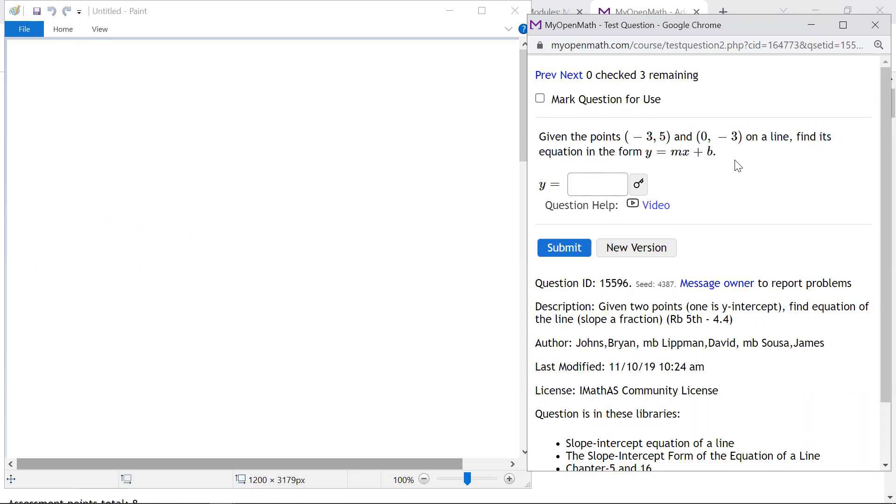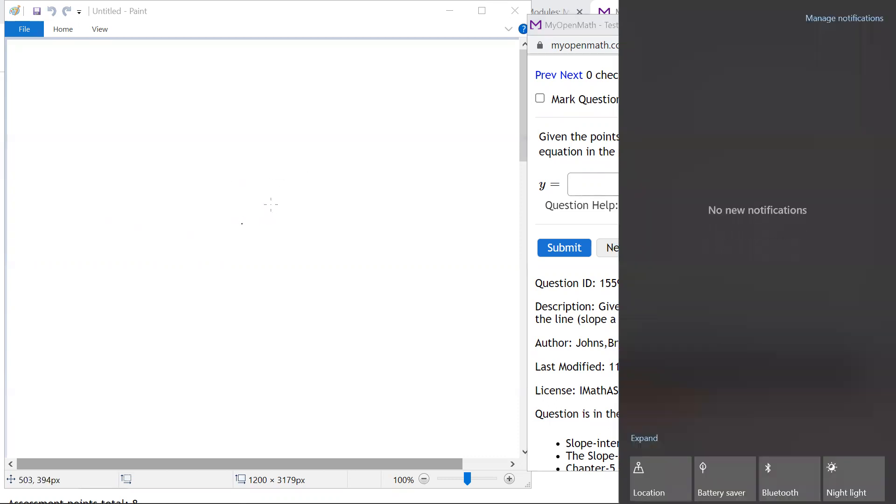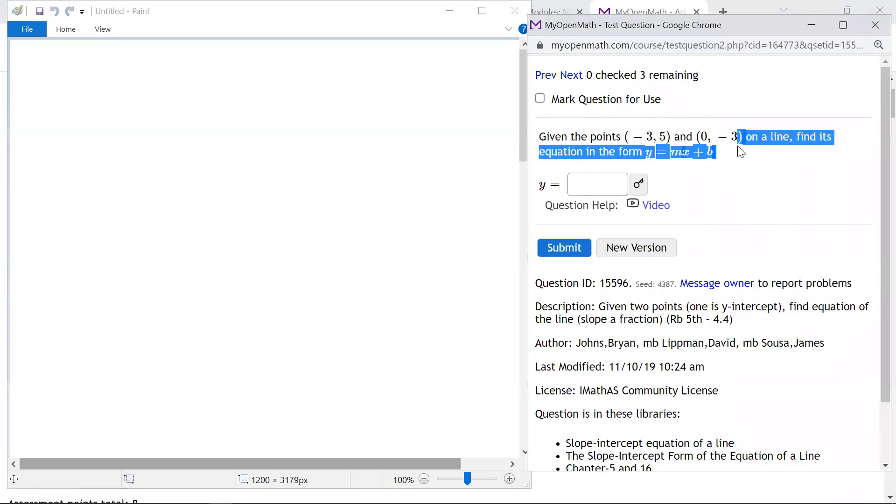So I've got to find the slope, then just write the equation. Let's see here. Let's get the board working. Okay, so I'm going to write the points so they're in a row, so I can write and talk about them.